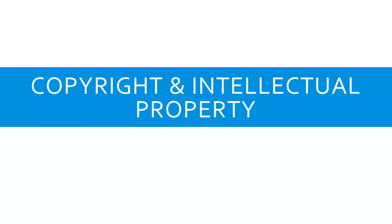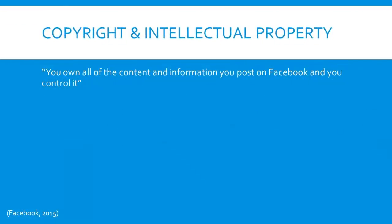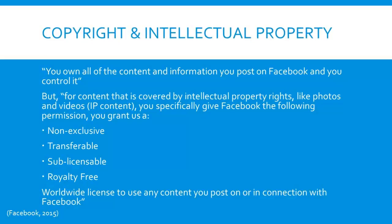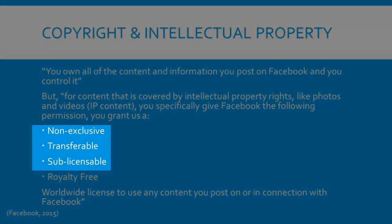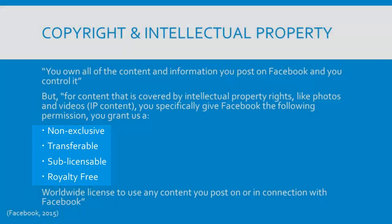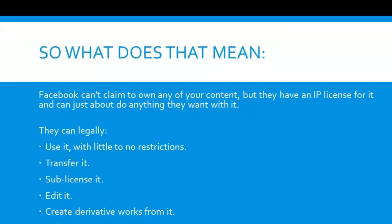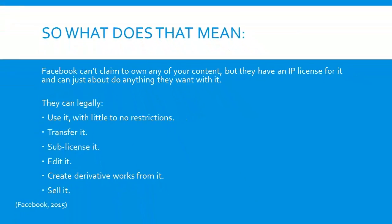Let's look at copyright and intellectual property. One of the first points that Facebook's terms of use state is that you own all the content and information you post on Facebook and you control it. Closely followed by the words echoed in most social networking sites' terms of use policies, for content like photos and videos, you specifically give us the following permission. You grant us a non-exclusive, transferable, sub-licensable, royalty-free, worldwide license to use any intellectual property content that you post on Facebook. Basically, while Facebook can't claim to own that picture you posted last week, they have an intellectual property license for it, which more or less gives them permission to do whatever they want with it.